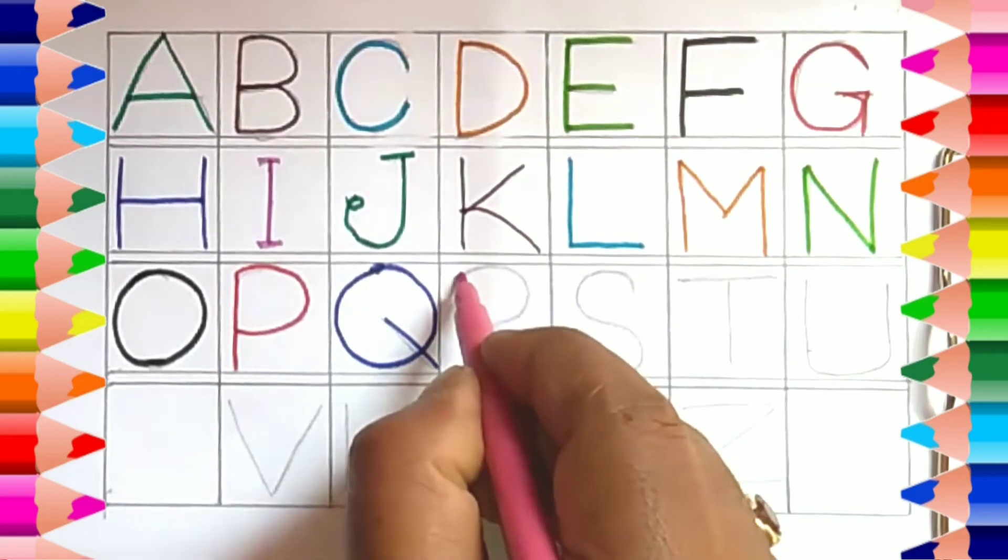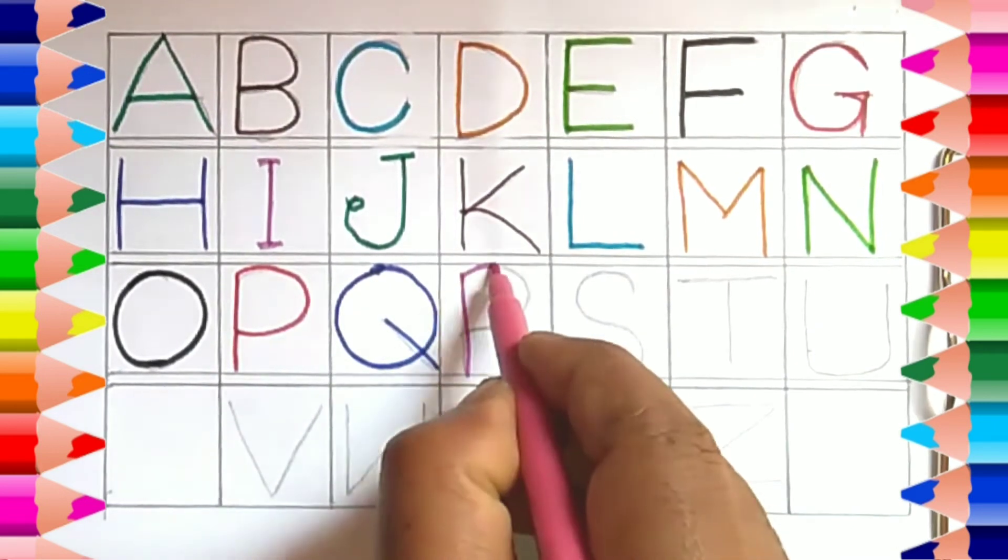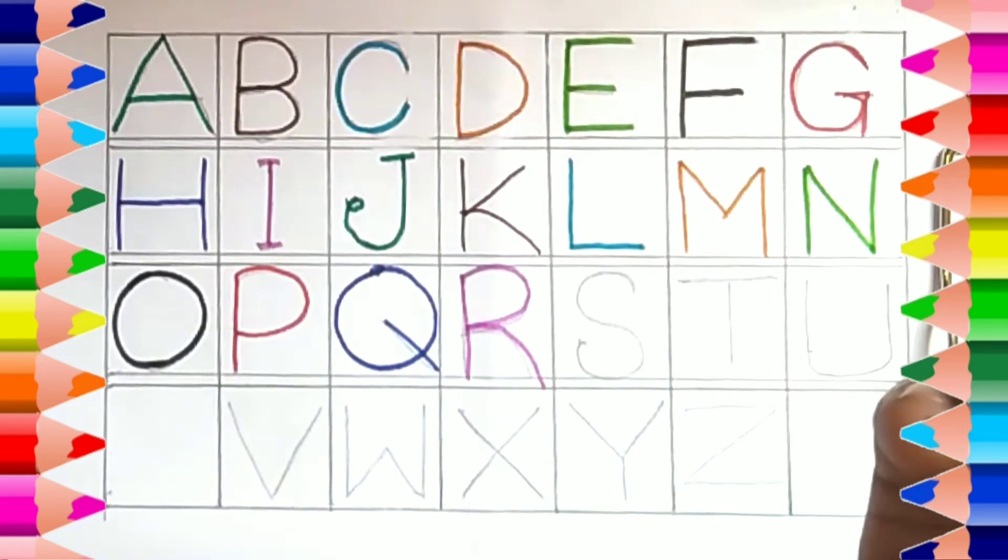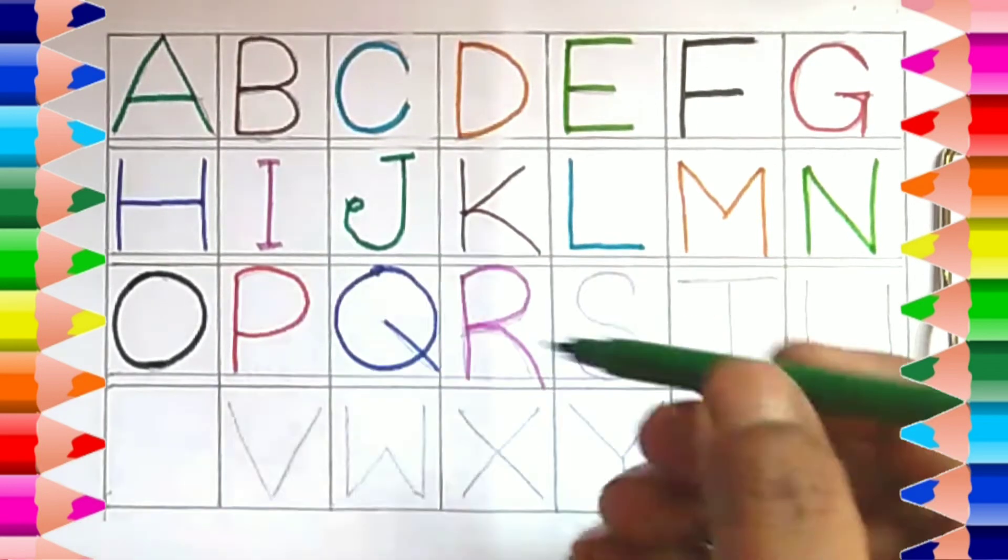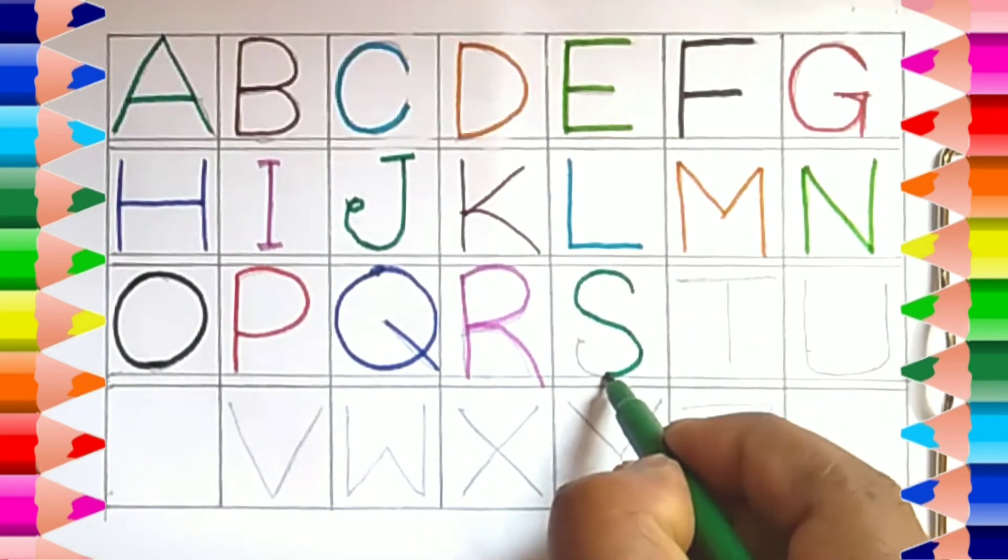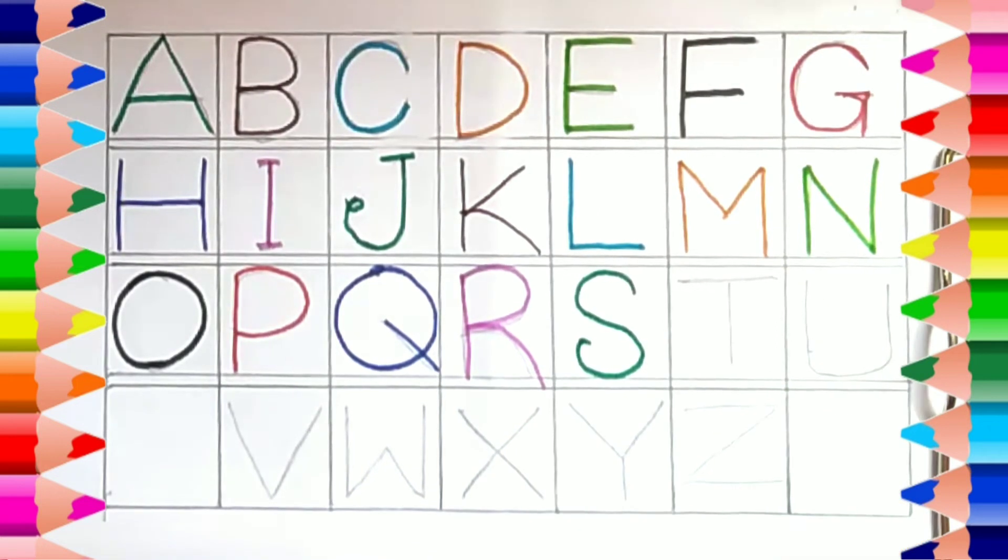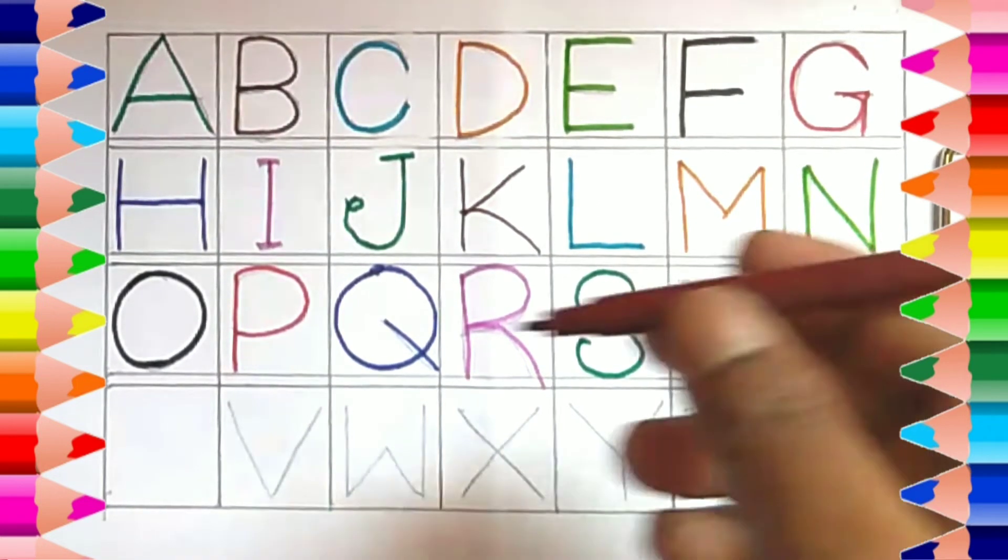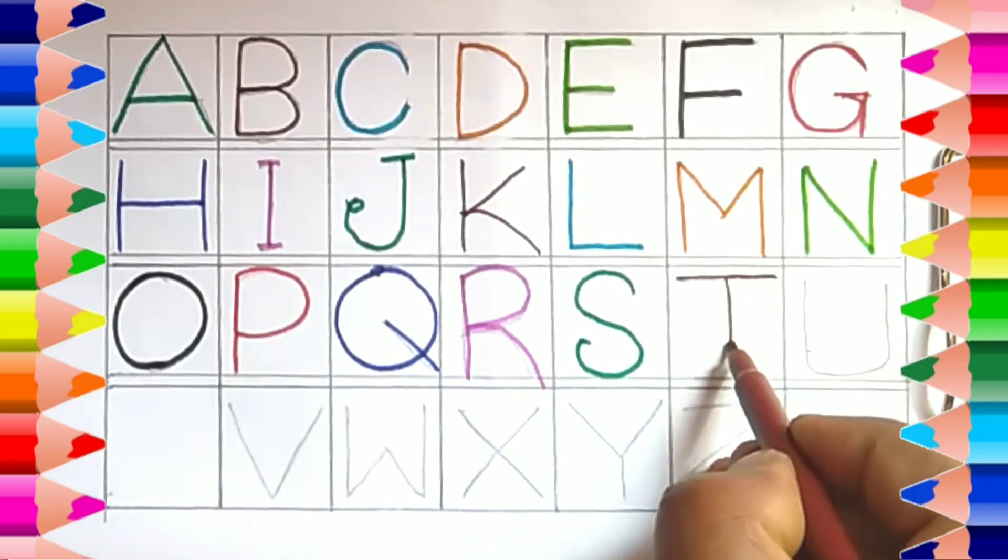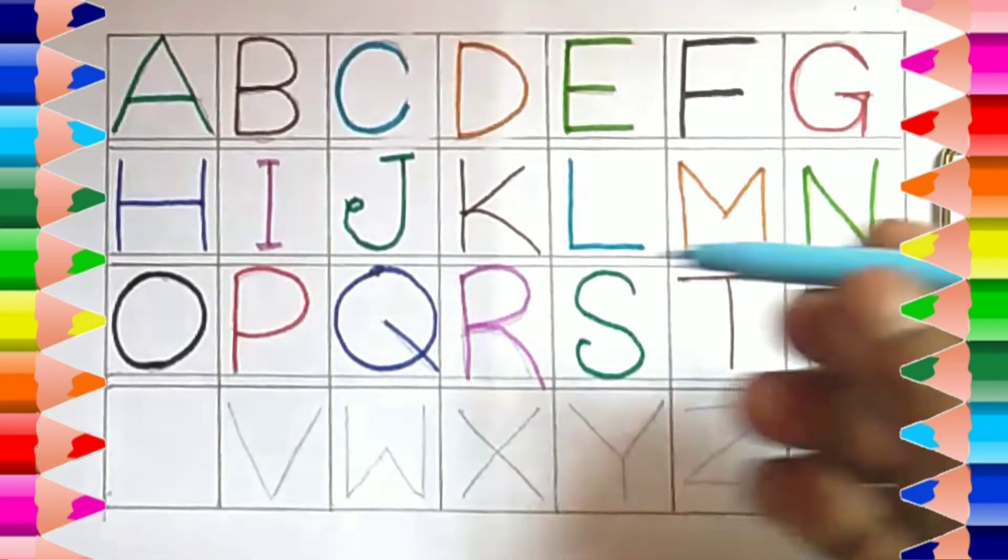Pink color, R, R for ring. Deep green color, S, S for star. Chocolate color, T, T for toy.